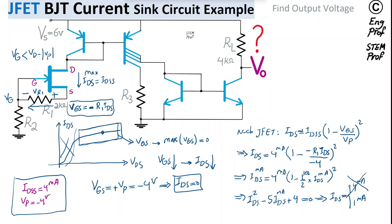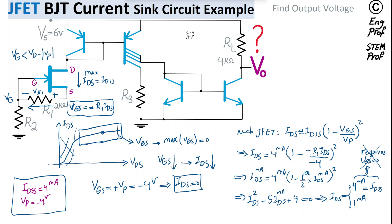Solving the quadratic gives IDS equal to either 4 milliamp or 1 milliamp. The 4 milliamp solution is impossible — that is IDSS, and achieving it would require VGS to be zero. But since IDS is non-zero, current passes through R1 producing a voltage drop, meaning VGS cannot be zero. Therefore the only feasible solution is IDS equals 1 milliamp.